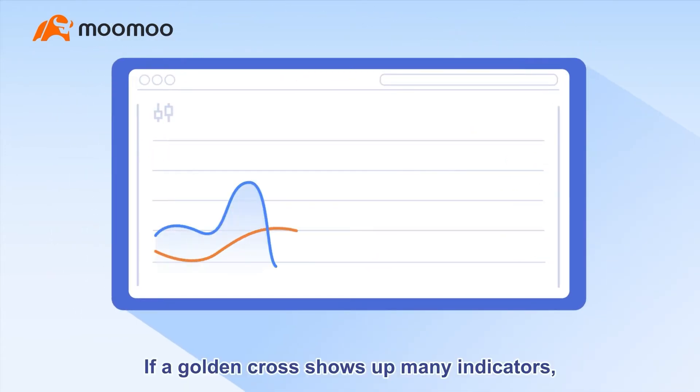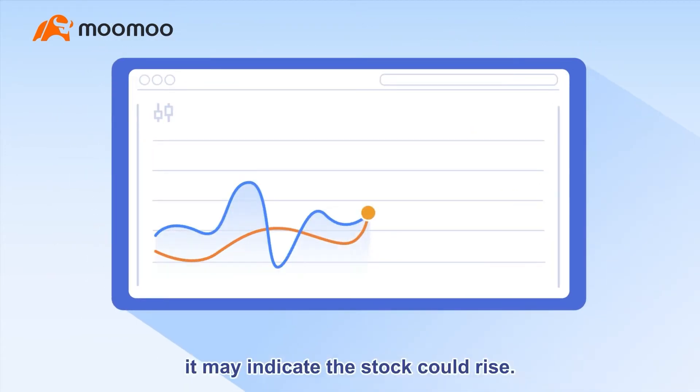If a golden cross shows up across many indicators, it may indicate the stock could rise.